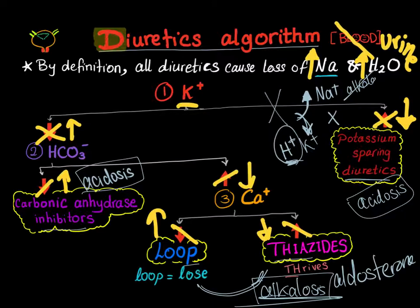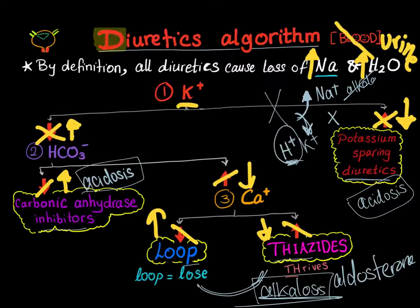But if the potassium in the urine is high, you look at bicarbonate. If bicarbonate is high in the urine, it means there is a diuretic that's dumping the bicarbonate into the urine — which is the carbonic anhydrase inhibitor.